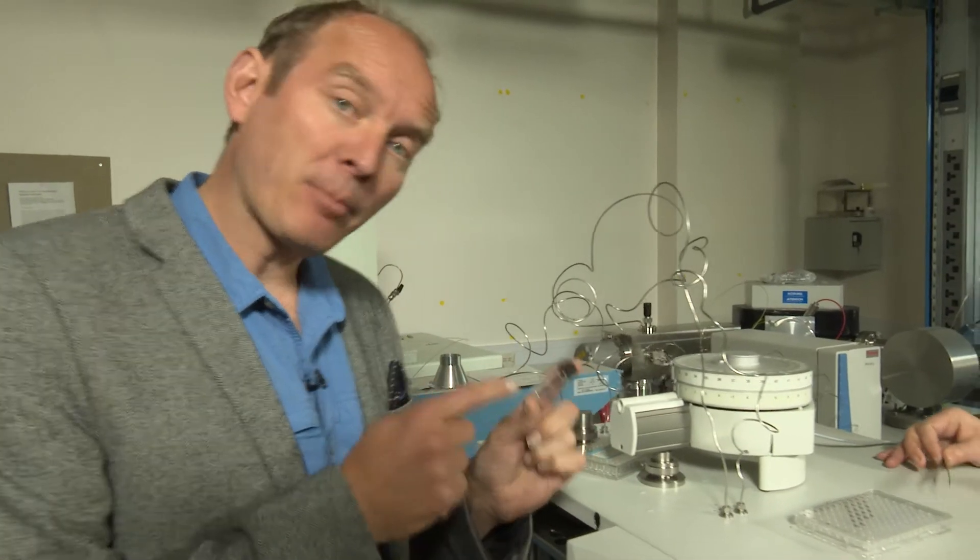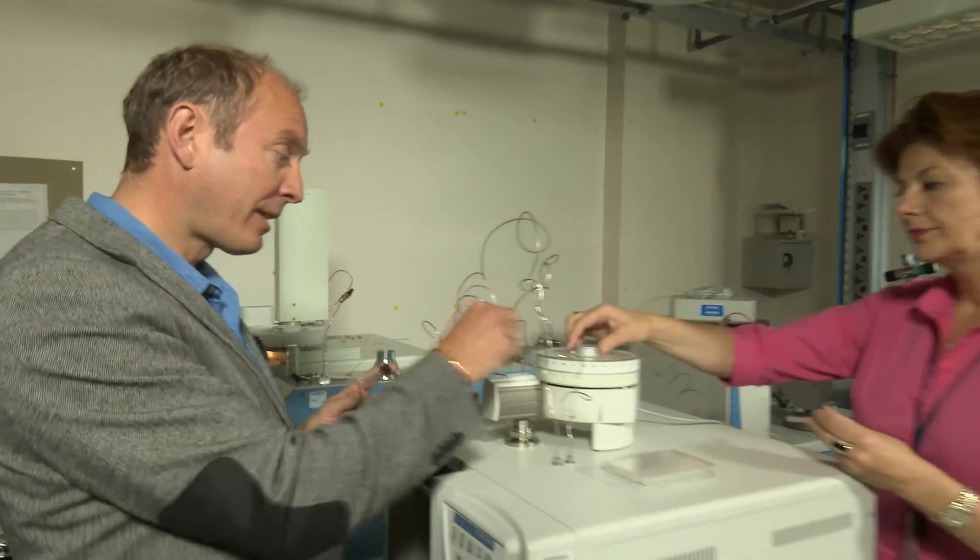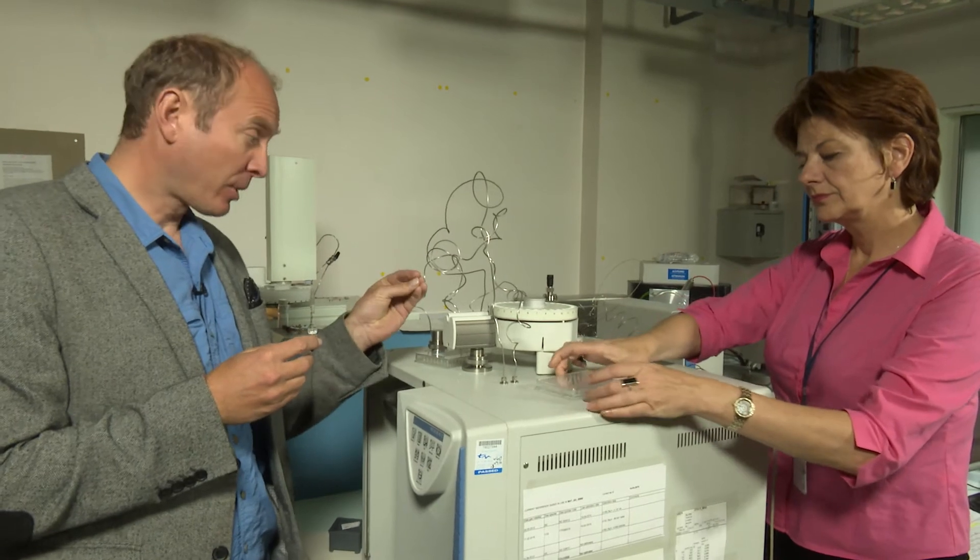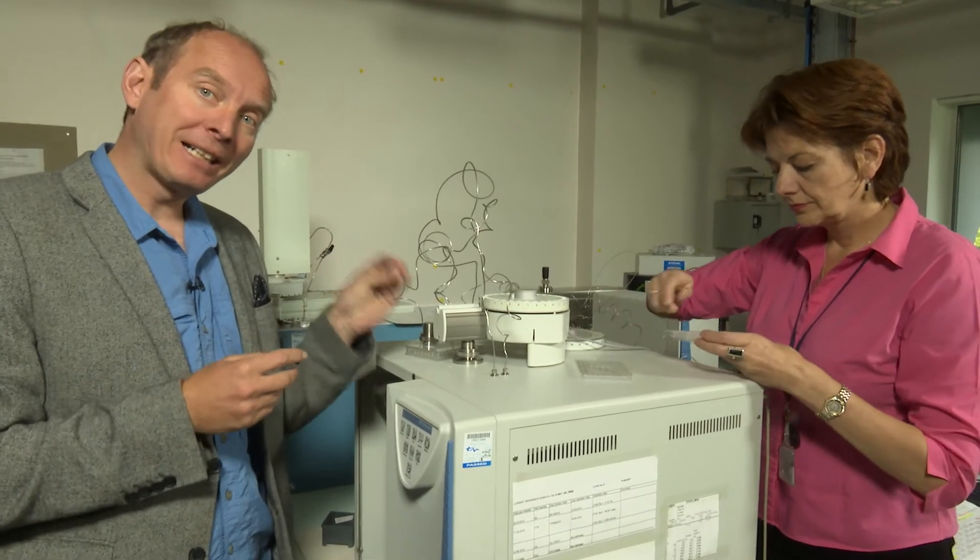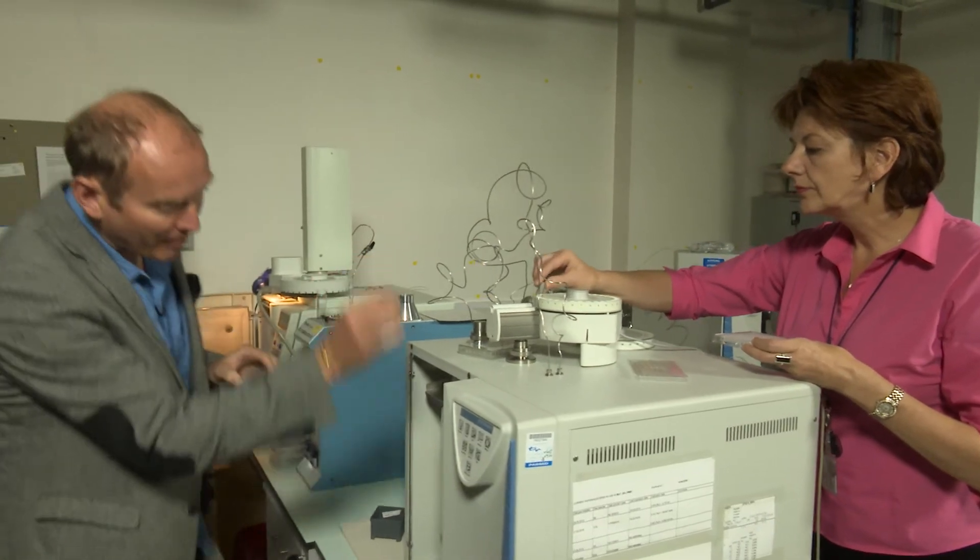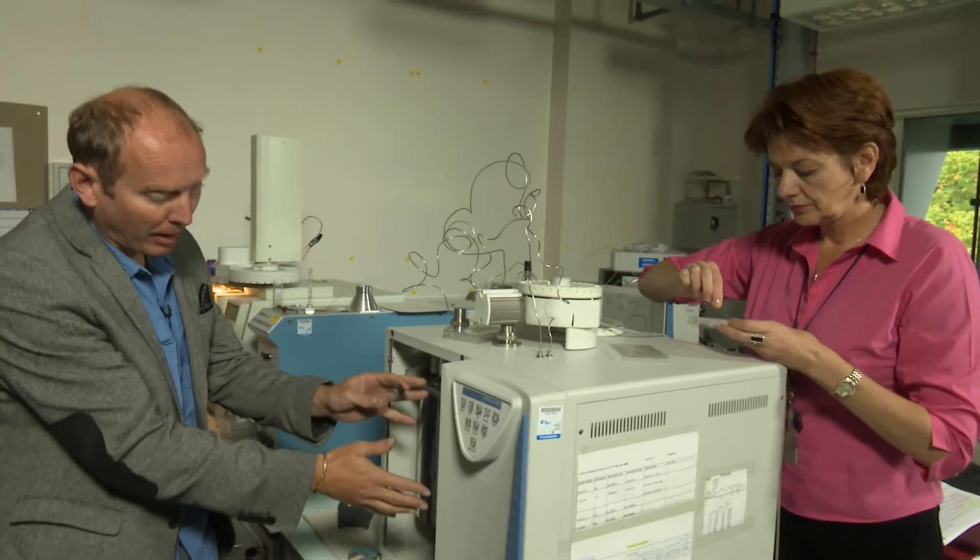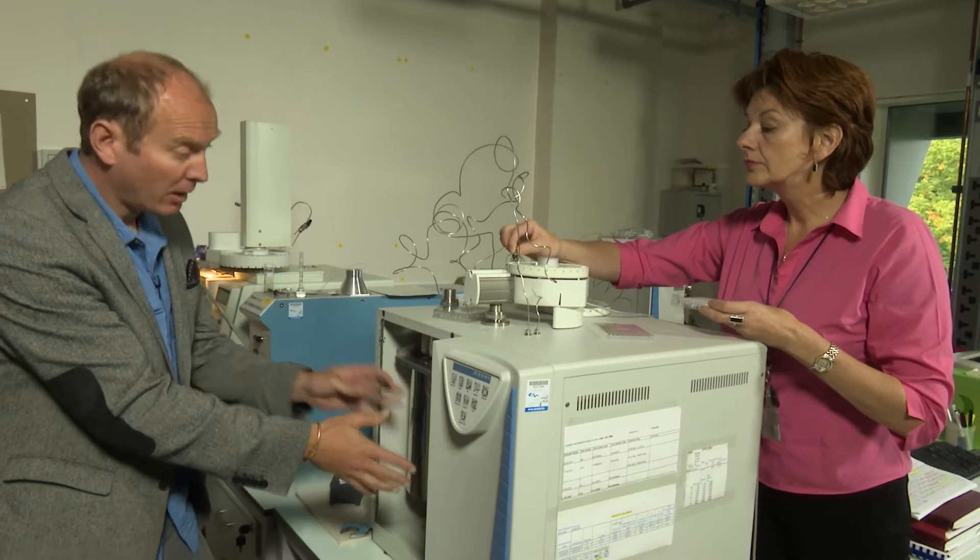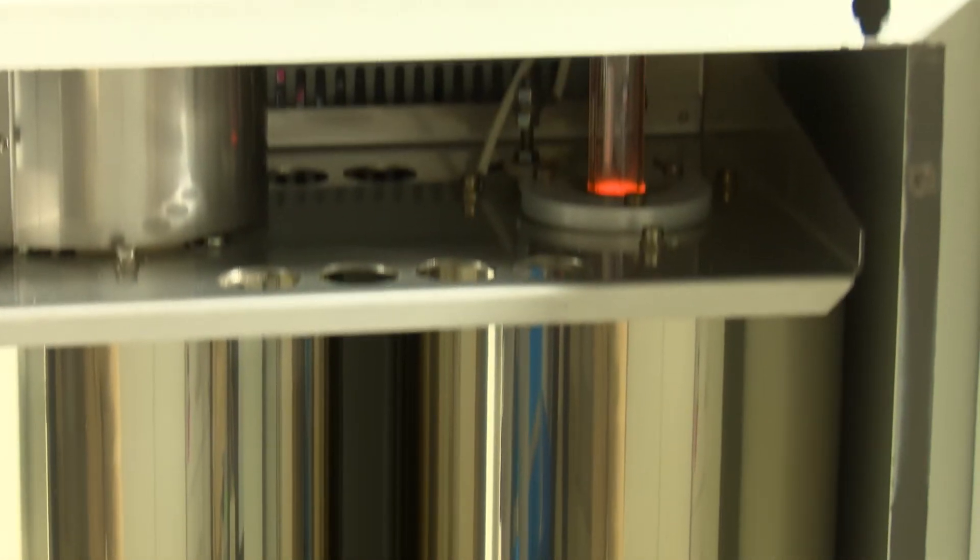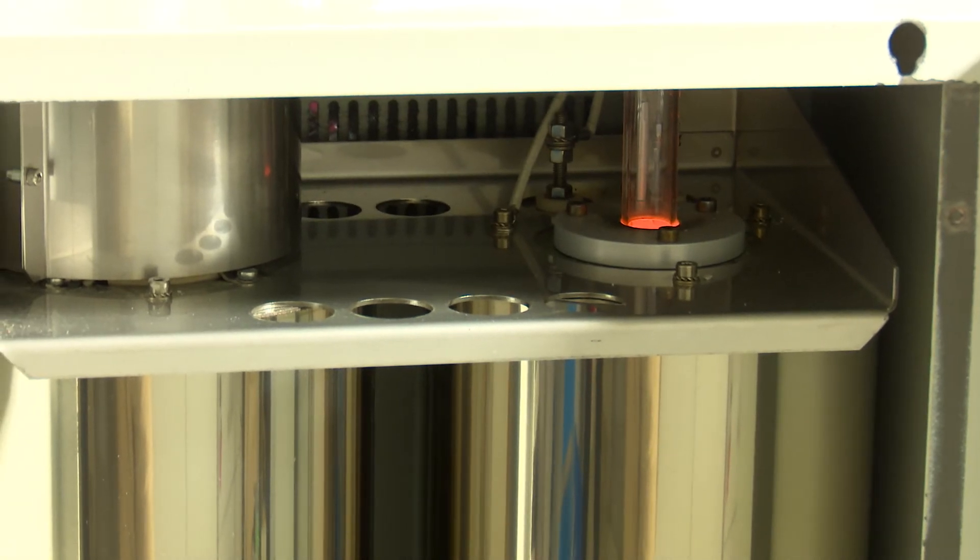The final capsules are then loaded into this carousel along with empty tin capsules and tin capsules containing international standards. These are dropped automatically into the combustion and reduction chamber of the elemental analyzer where carbon is combusted to carbon dioxide and nitrogen oxides reduce to nitrogen gas.